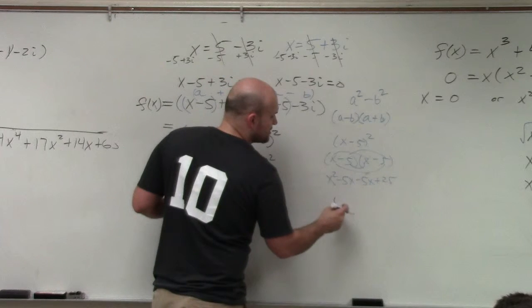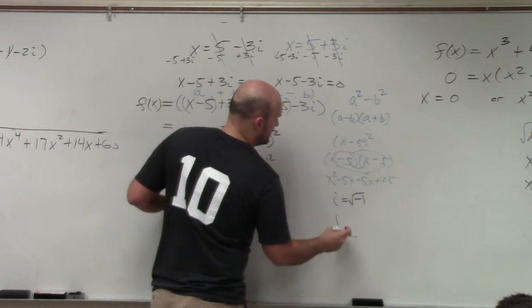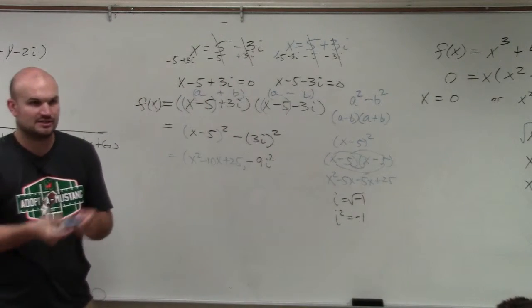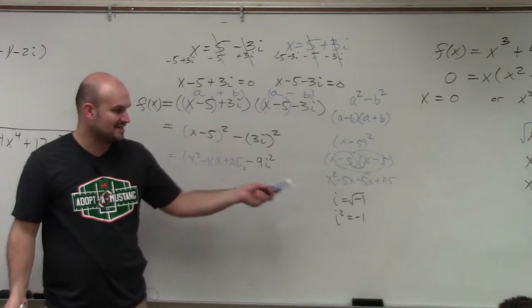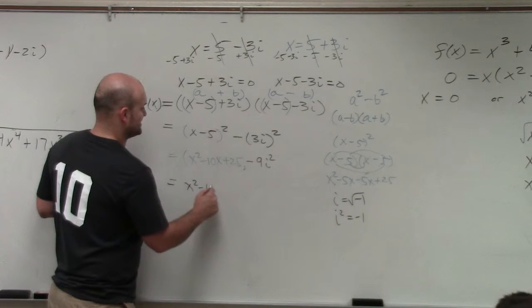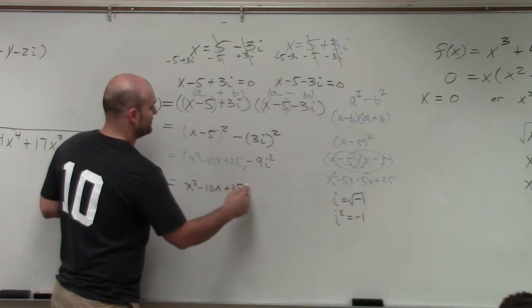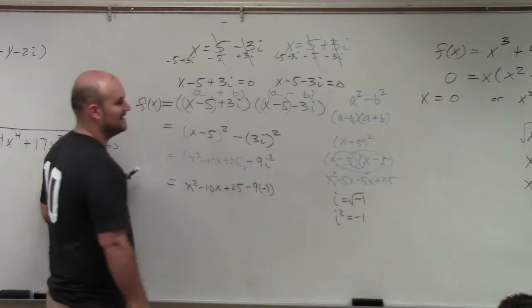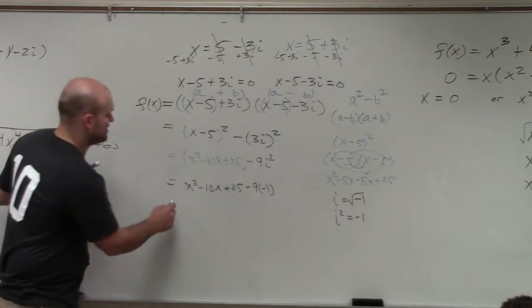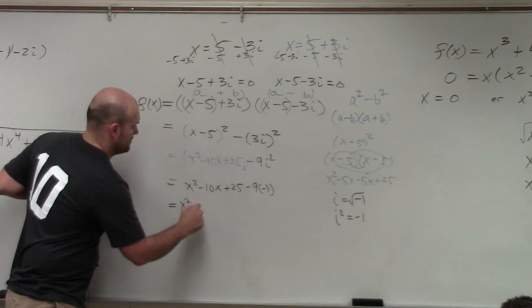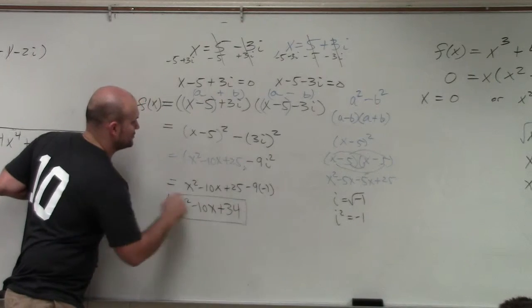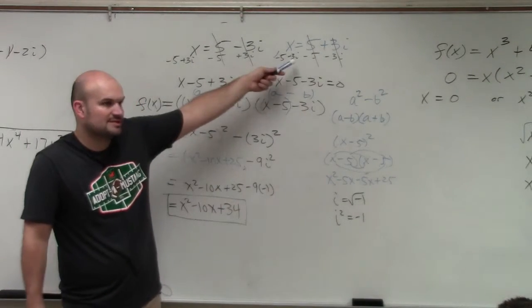So what I want you guys to understand is if i equals the square root of negative 1, then i squared equals negative 1. Right? Because if you square both sides, i squared equals negative 1. So in reality, I have x squared minus 10x plus 25 minus 9 times negative 1. Negative 9 times negative 1 is going to be a positive 9. Plus 25 is going to be a 34. So that is your final polynomial with the two complex zeros.